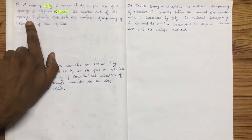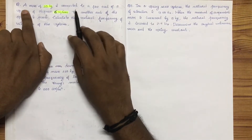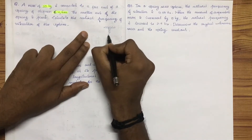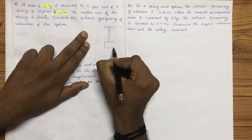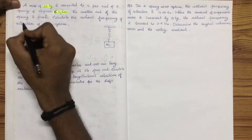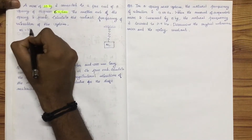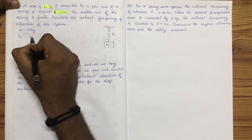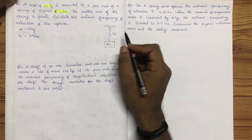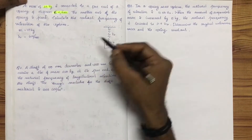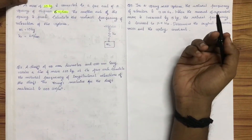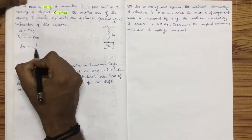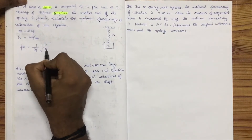The mass of 10 kg is connected to a free end of a spring. The other end of the spring is fixed. Calculate the natural frequency: fn is equal to 1 by 2π into root of k by m. Substitute the values.